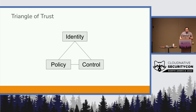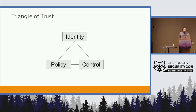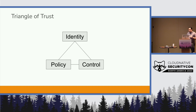Let's jump into a simplified definition of Zero Trust. This is something I wrote up before the NIST definition existed. The way I would tell companies at the time — before we would call it Zero Trust — is we want to establish an identity. And when we talk about identity, we specifically mean a cryptographic identity you can bind against.